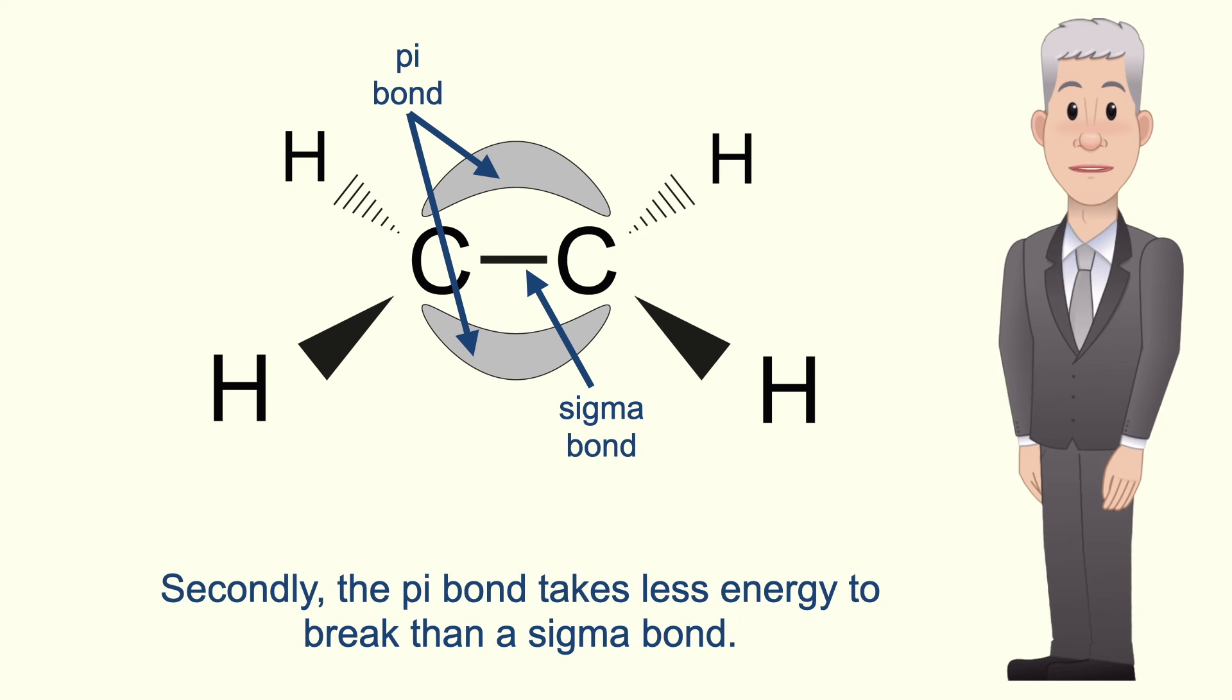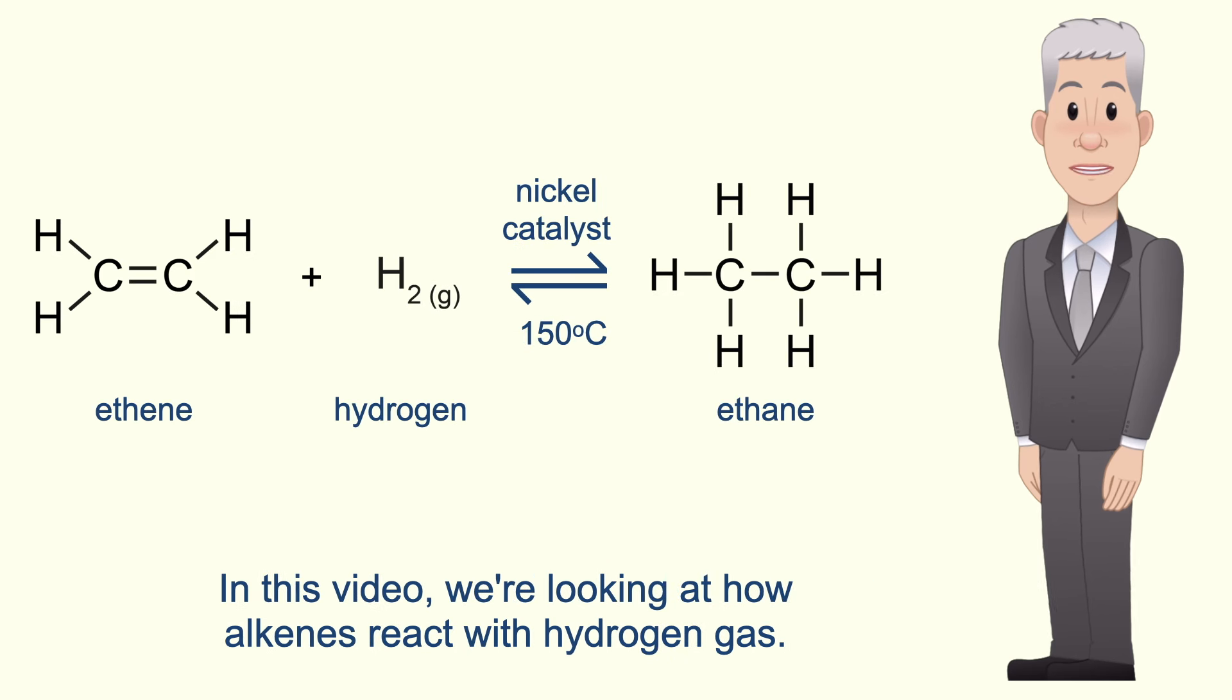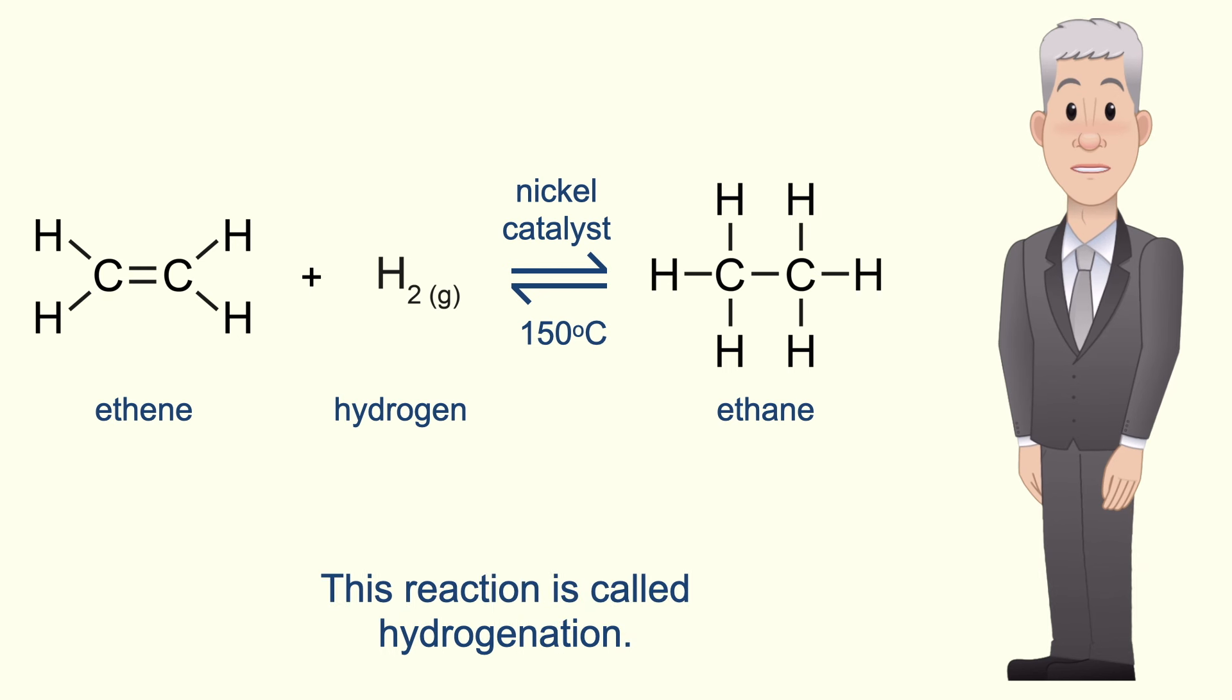Secondly, the pi bond takes less energy to break than a sigma bond, and because of this, the pi bond is more likely to take part in chemical reactions. In this video we're looking at how alkenes react with hydrogen gas. This reaction is called hydrogenation.